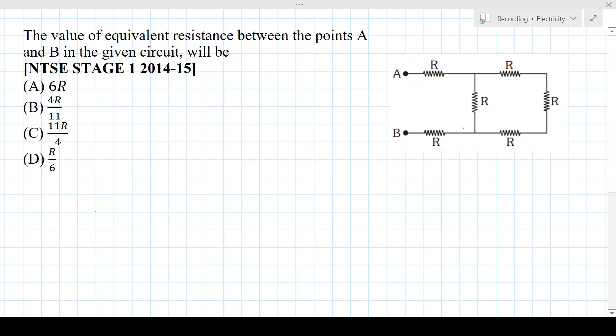Hello everyone, now we are going to be solving a question from physics, the chapter electricity. The question is, the value of equivalent resistance between the points A and B in the given circuit is what? So A is over here, B is over here.